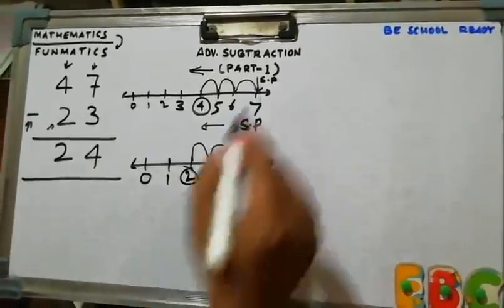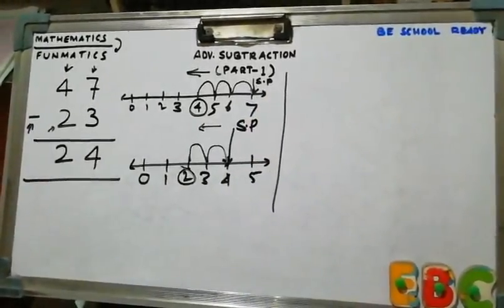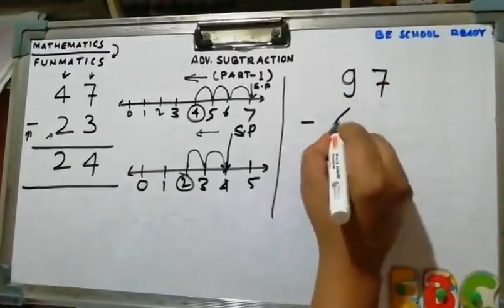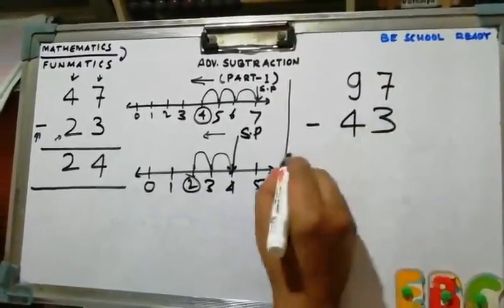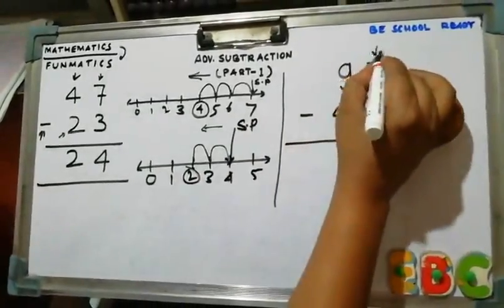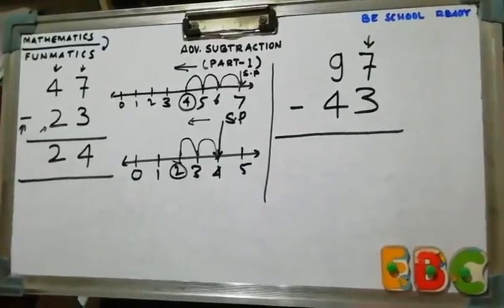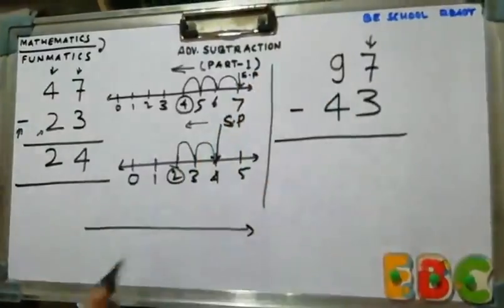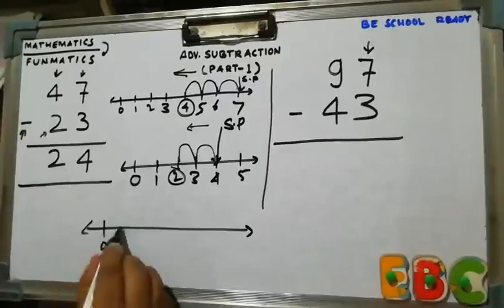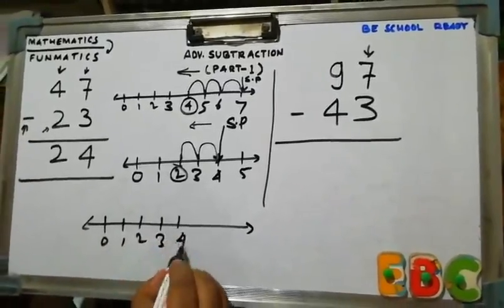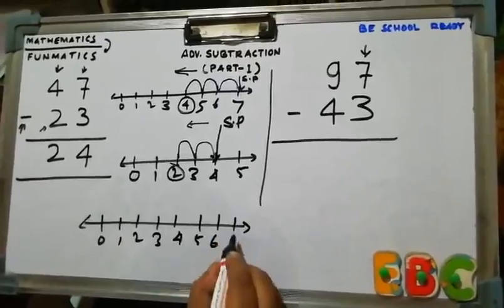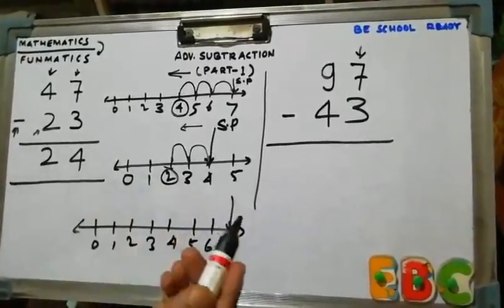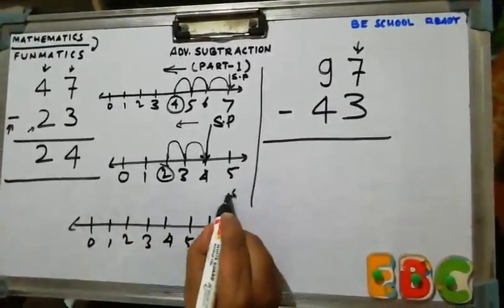Now take another example. This time 97 minus 43. So first step at units place number. The first number is 7. So we will show 7 on the number line, and we have to take 3 jumps in reverse direction.